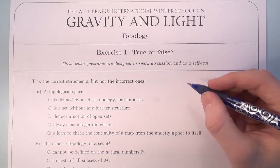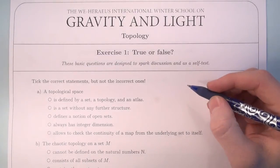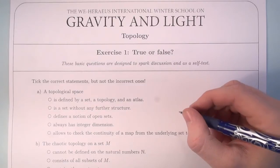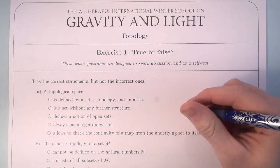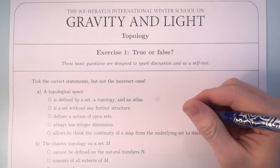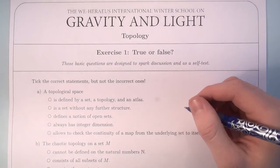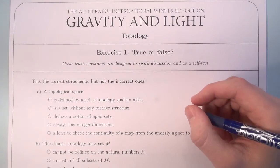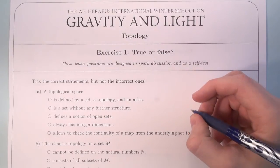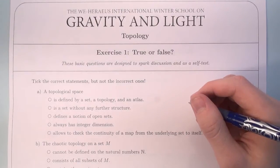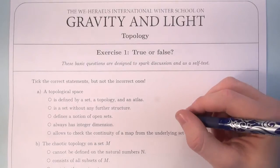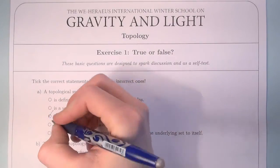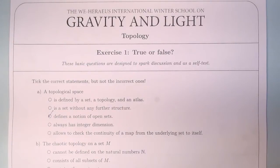In part A, we look at a topological space. The first answer says that it is defined by a set, a topology and an atlas. That is not true since a topological space is only a set equipped with a topology. An atlas is additional structure required for a topological manifold, introduced later on. A topological set is a set without any further structure — that is also incorrect since a topological space is a set equipped with a topology, and the topology is further structure. A topological space defines a notion of open sets — that is correct since a topology defines what open sets are.